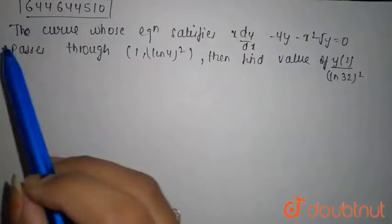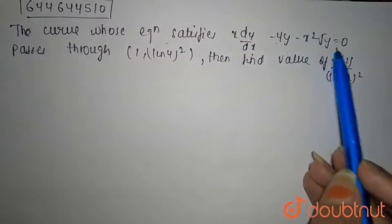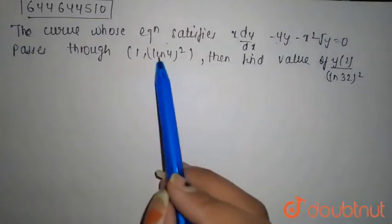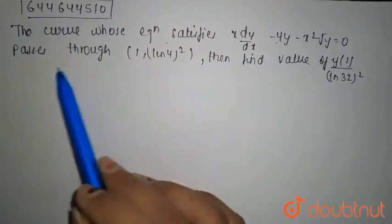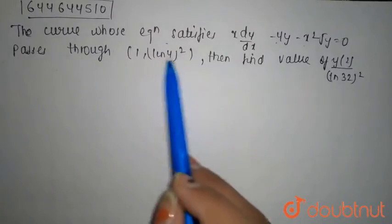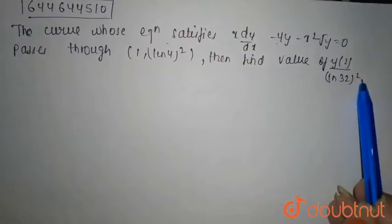Hello everyone, so our question is: the curve of the equation satisfying x dy/dx minus 4y minus x² root y equals 0 passes through (1, ln 4)², then find the value of y(2) divided by (ln 32)².